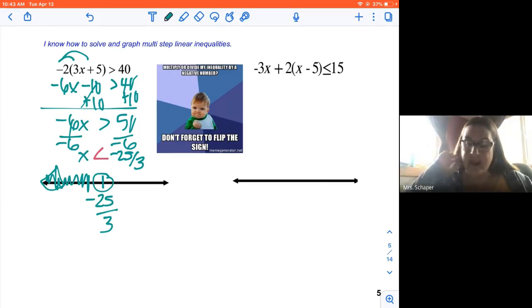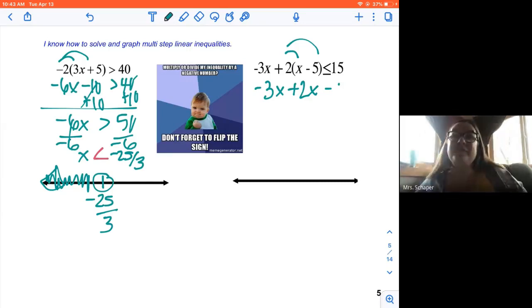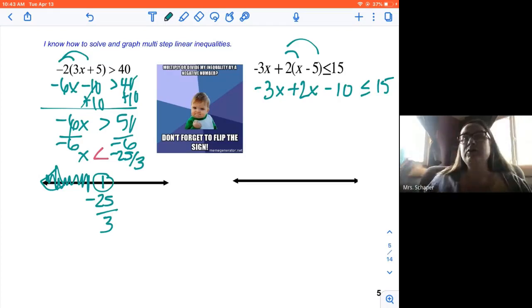Let's take a look at the second one. So we're going to distribute negative 3x, 2 times x is 2x, 2 times negative 5 is negative 10. So what I'm working on is those simplification skills, distributing, combining like terms, all those skills that we worked on earlier in the year, they're coming back, we're going to continue to refresh our memory. So -3x + 2x is -1x - 10 ≤ 15.